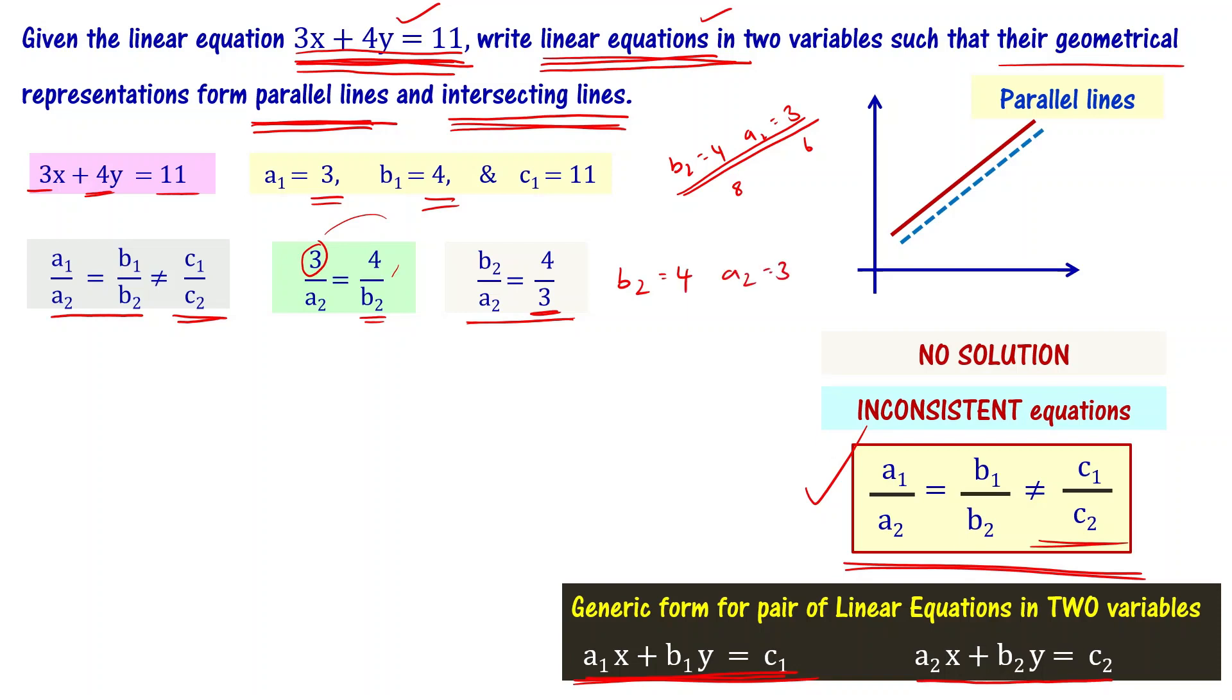Now let's find c2. Look at this relation: b1 by b2 is not equal to c1 by c2. So 4 by 4 is not equal to 11 by c2. This means 1 is not equal to 11 by c2, so c2 is not equal to 11. c2 can be any number other than 11. Let me take c2 equal to 12.